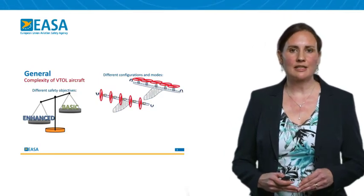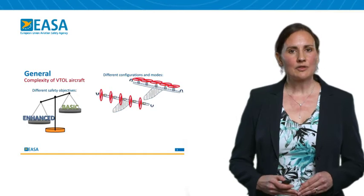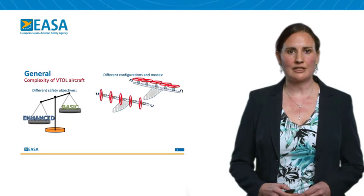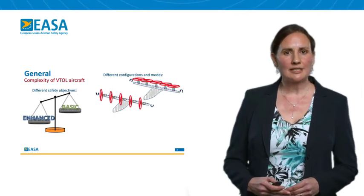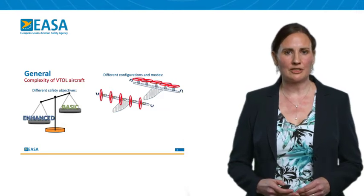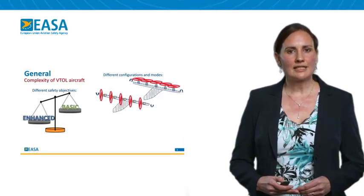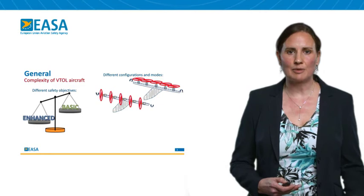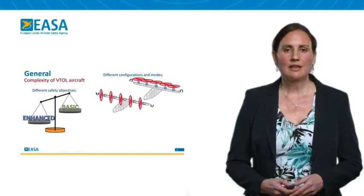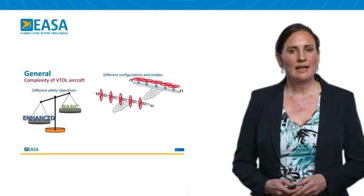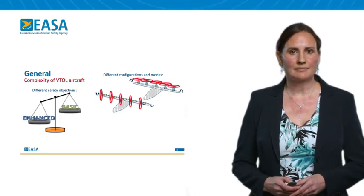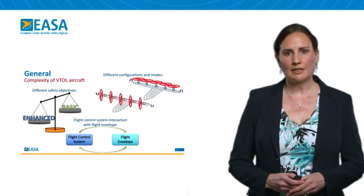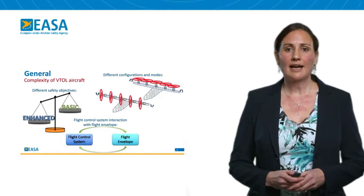The varying configurations and flight modes must also be taken into account in the means of compliance, which has been adapted to give flexibility to address different configurations and also to account for aircraft with multiple configurations. For example, an aircraft that takes off and flies as a rotorcraft and then at forward speed can transition more like an aeroplane. These different configurations are included in the flexible means of compliance, which also covers any transition phases.